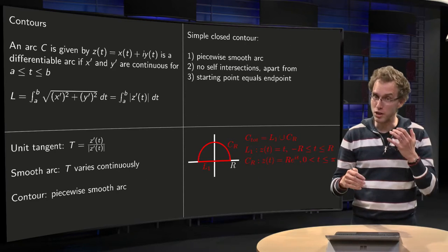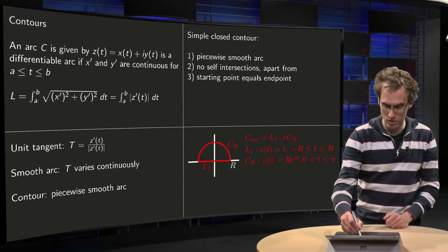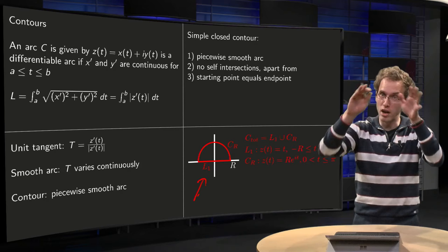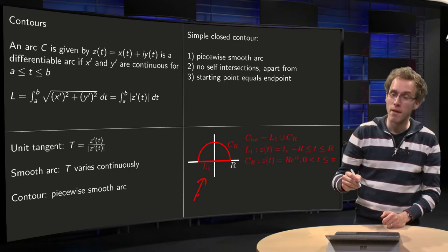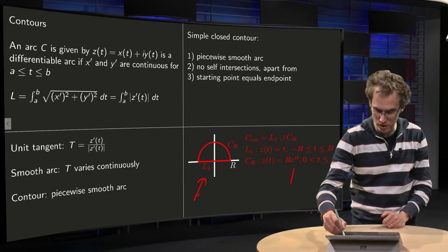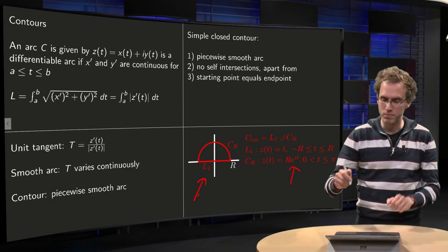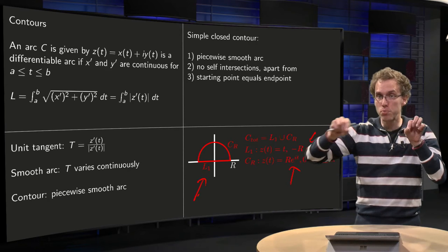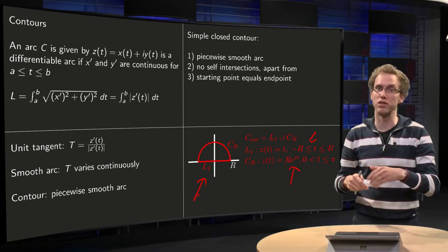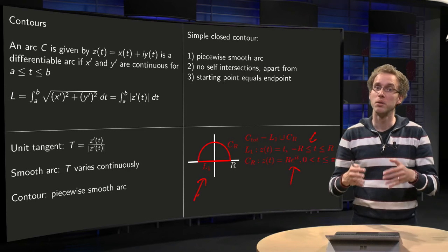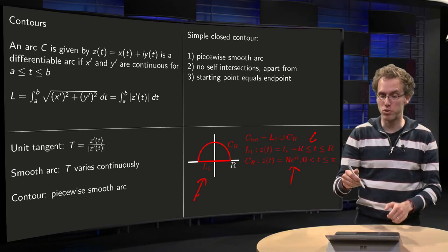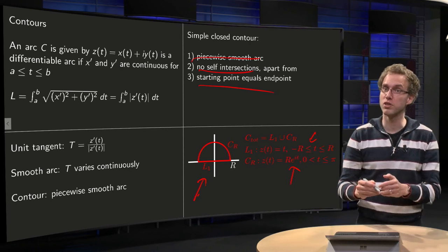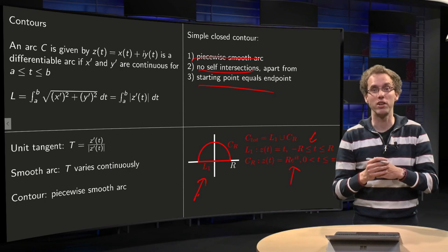So an example which we are going to be using a lot is that this contour over here, L1 joined with CR, where CR is a circle in the upper half plane, half of the circle, so this part, and the L1 is the line in the XY plane. And you see we go smoothly, we have one and two certain changes of direction, but that's allowed because we still have a piecewise smooth arc. So that's okay, no self intersections, start point equals end point, so this is a typical example of a contour.